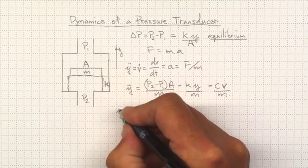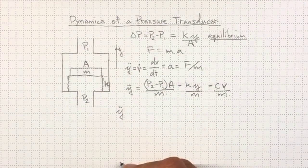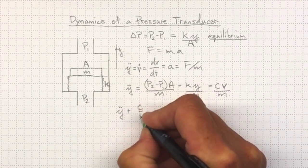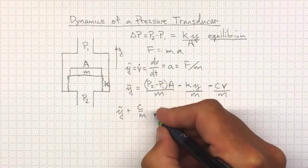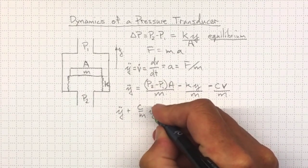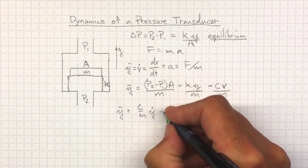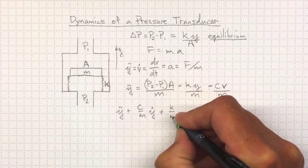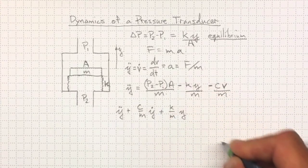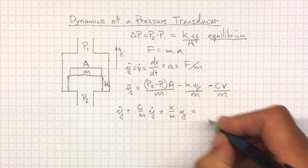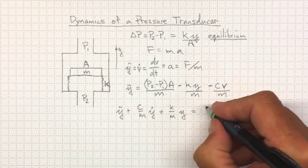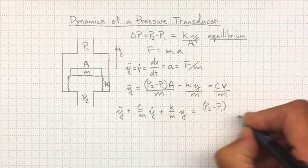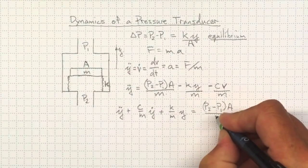So if we rearrange that, we can get that the second derivative of position plus the C over M, something to do with the damping, times the first derivative of position plus K over M times the position must be equal to whatever the forcing function is that's driving this thing. And what's driving it is a difference between the pressures, P2 minus P1 times the area divided by the mass.